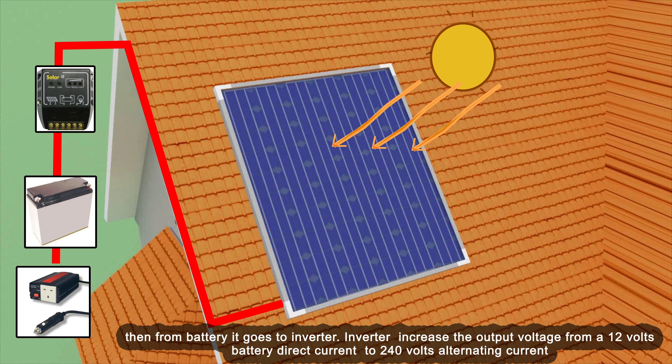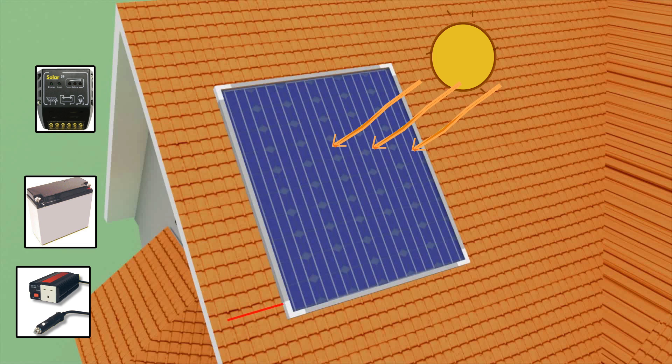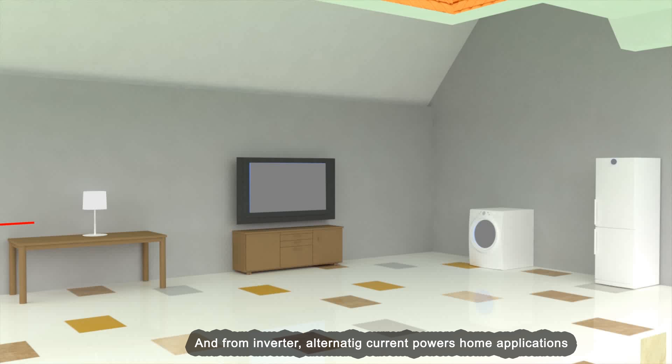Then from the battery, it goes to an inverter. The inverter increases the output voltage from a 12 volt battery direct current to 240 volt alternating current. From the inverter, alternating current powers home applications.